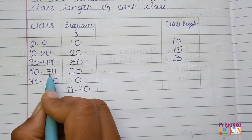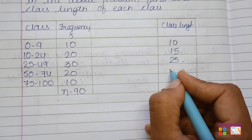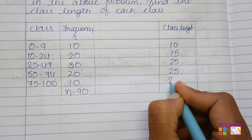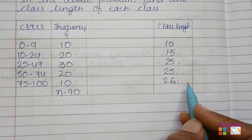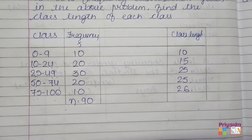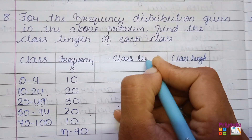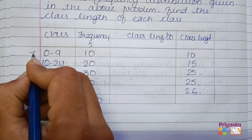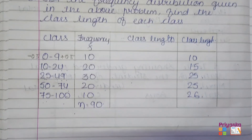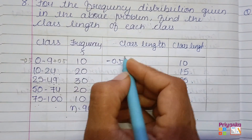For 50 to 74, rather than taking 74, count it as 75. The distance between 50 and 75 will again be 25. The distance between 75 and 100 would be 26. This was the simple and quick method to write down the class length. But if we go with the systematic way using the formula, subtract 0.5 from the lower limit and add 0.5 to the upper limit.